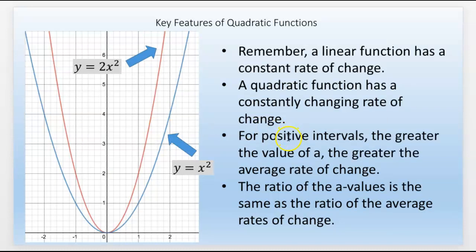I want to review something about this a. We talked about a rate of change. Remember, a linear function has a constant rate of change. But a quadratic function has a constantly changing rate of change. A quadratic, the rate of change is changing, but it's changing at a constant rate.